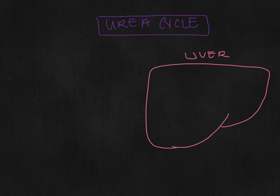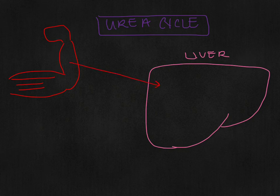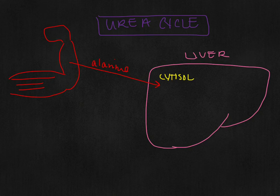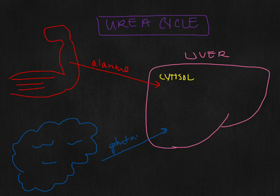First off, it is transporting it from the body to the liver. So if it's coming from the muscles, it actually travels safely through the blood in the form of alanine and then ends up in the liver cytosol. Now, if it comes from other tissues, such as the brain, then it goes in the form of glutamine and ends up going to the mitochondria.